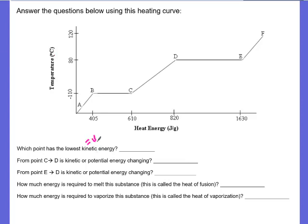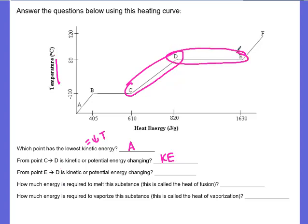Lowest kinetic energy is the lowest temperature, so that would be A. From C to D, we're on a slope and temperature is changing, so kinetic energy must be changing. From E to D, we're on a plateau, temperature is not changing, so potential energy must be changing.